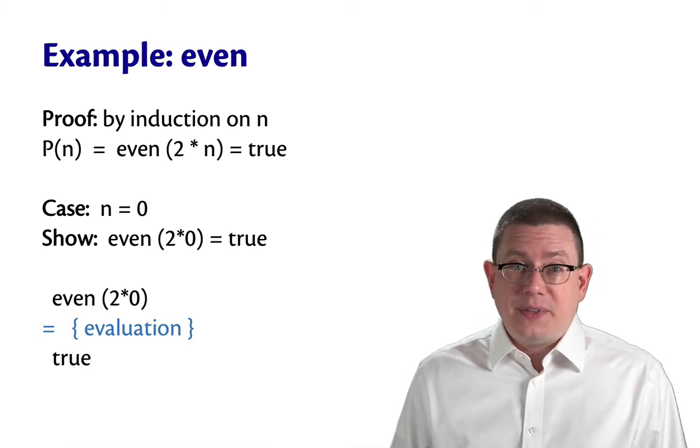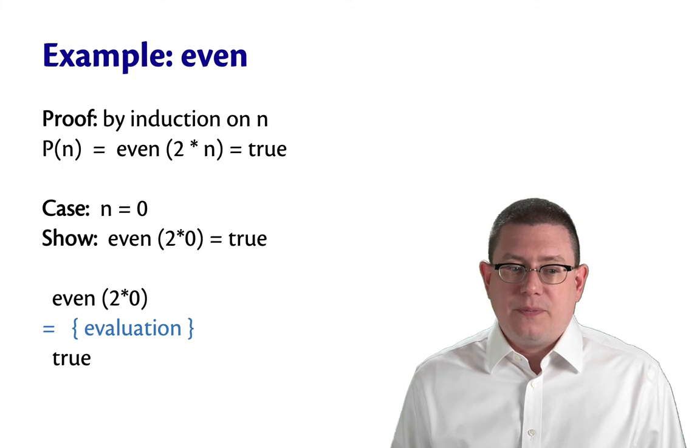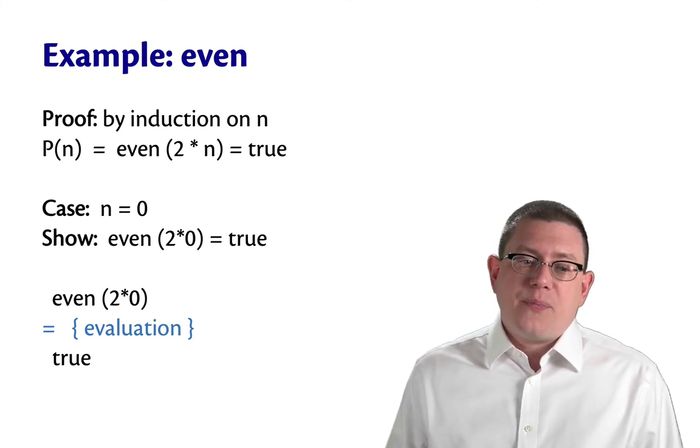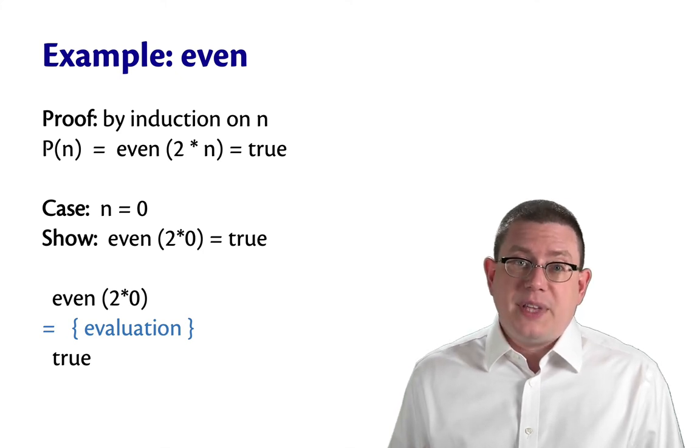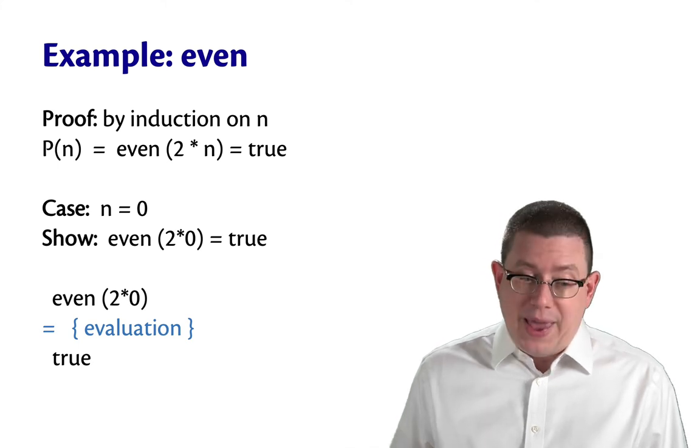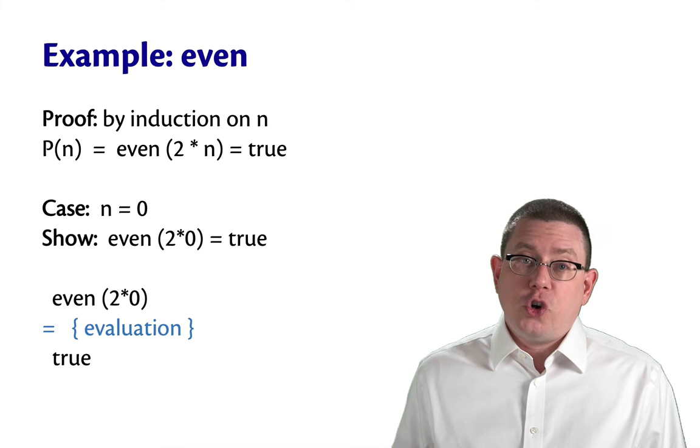Let's do an example of this. Let's prove that claim about our function, even. We're trying to prove a property P holds. And that property is that for any number N, even of 2 times N is equal to true. There's a base case, which is where N is 0. In that case, we want to show that property P instantiated on 0. So we want to show that even of 2 times 0 is equal to true.